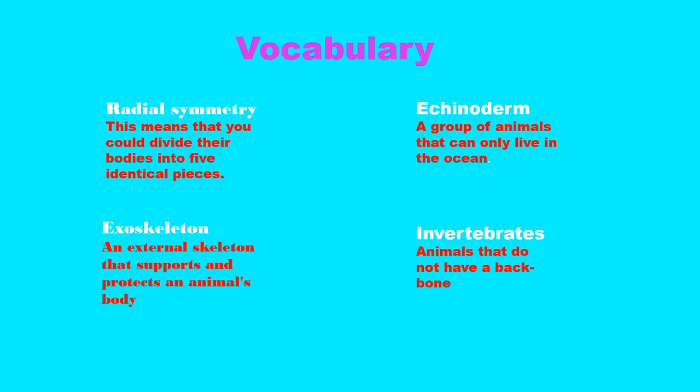Enkinoderm — an enkinoderm is a group of animals that can only live in the ocean. And invertebrates — invertebrates are animals that do not have a backbone.